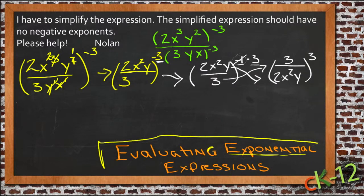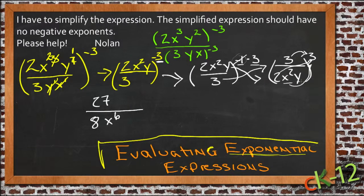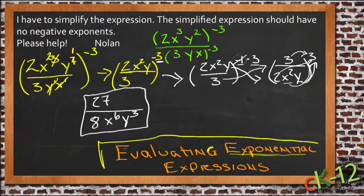So now we have 3 over 2x squared y to the power of 3, which is first 3 to the power of 3, that's 27. And then 2 to the power of 3, that's 8. x squared to the power of 3 is x to the sixth. And y to the power of 3, that's y cubed. So your final simplified expression here is 27 over 8x to the sixth y cubed.